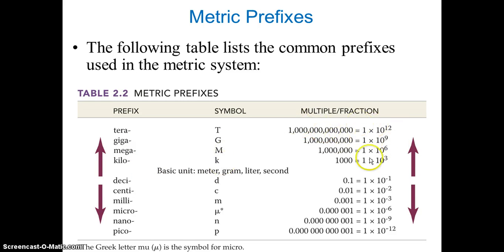When you see those multiple fractions, tera is 10 raised to 12, giga is 10 raised to 9, mega is 10 raised to 6, kilo is 10 raised to 3. And here you go, there is a base unit: meter, gram, liter and second.